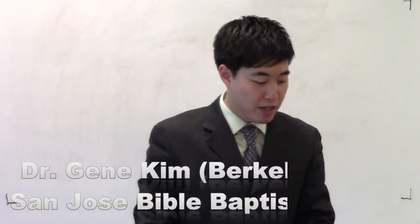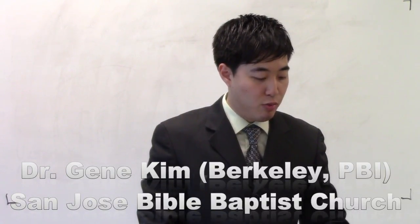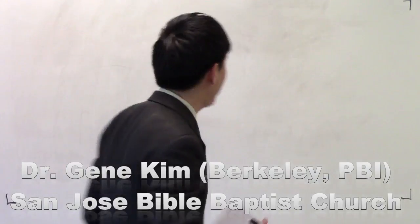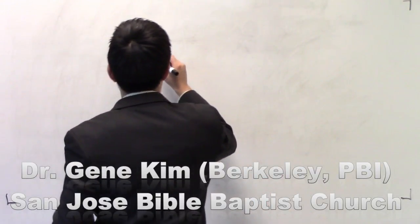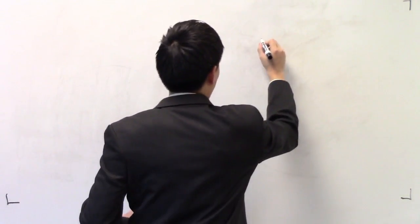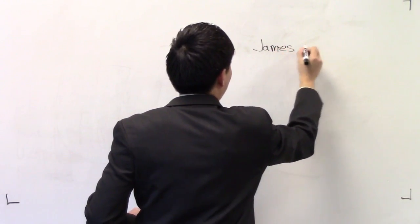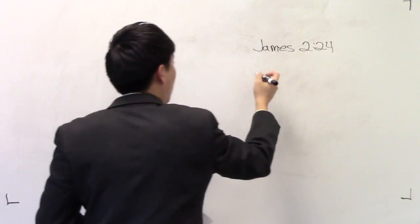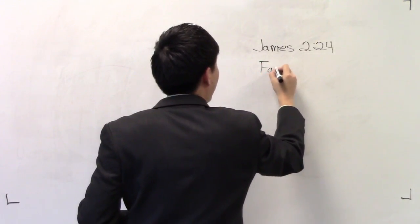Dispensationalism is a very important doctrine because they will mess up right here with James chapter 2 verse 24, a very common passage. Basically, a lot of churches know that verse. They say, you see then how by works a man is justified and not by faith only. So James 2:24, what it's showing right here is that there is faith and works.